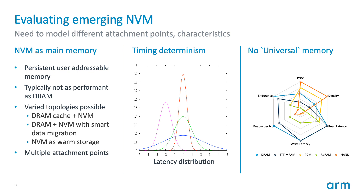Before I get into the interface, a quick overview of emerging non-volatile memory. If you're using non-volatile memory as main memory, you potentially are adding persistence to user-addressable memory, though that is not always required — it's application-specific. It's typically not as performant as DRAM, and there are many possible topologies and attachment points; you could attach it to the DRAM bus or to a packetized protocol such as CXL. Timing determinism is not the same as DRAM — NAND at the other extreme has very long tail latency and these emerging technologies fall somewhere in between. There is no universal memory, no silver bullet, and they all have different trade-offs in performance, power, and capacity.